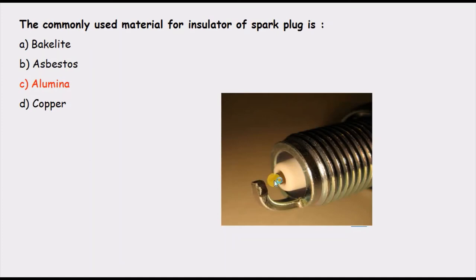This alumina is placed between the central electrode and the earth electrode. Its function is to act as electrical insulation between these two electrodes. The insulator must be very hard to sustain mechanical vibrations since this part is connected to the engine, and thermal stresses are also present. Copper is obviously a soft material and is not an insulator. Other materials are not strong enough to take these stresses, so alumina is the best option.